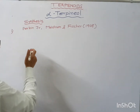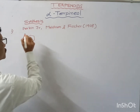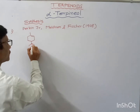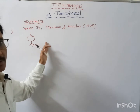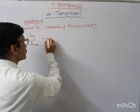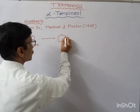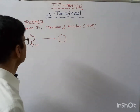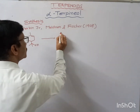What was the strategy followed to choose the reactant molecule? This is our alpha-terpineol. What should be the starting material for the synthesis? The strategy followed by Perkin Jr. involves a retrosynthetic analysis approach.